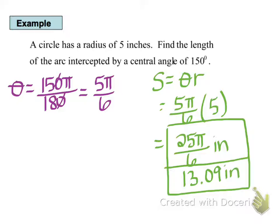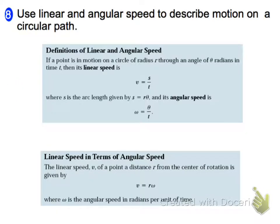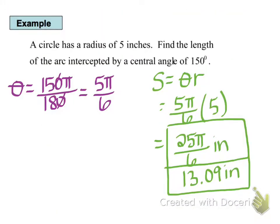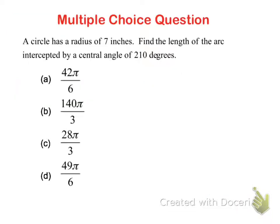So hopefully you switched your angle to radians first and got 5 pi over 6. And then when you multiplied that by 5, the radius, we got 25 pi over 6, which is 13.09. Alright, right now I want you to try this multiple choice question. This is going to go into your Google form for the night. And then after that we'll go on to the next objective.